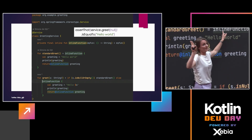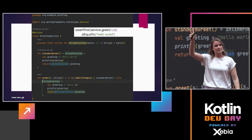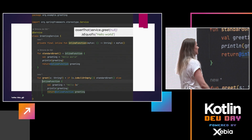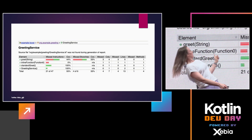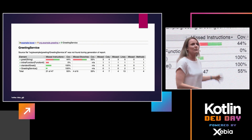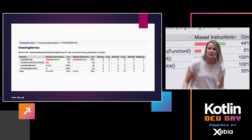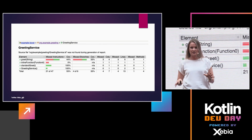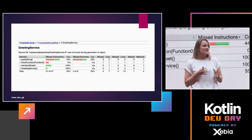So the expected flow is: it goes to greet, it's null so it falls back to your standard greet — that's the second method — which then calls the inline function. So three methods should have been hit. But unfortunately, if you look at your JaCoCo report, you see that the inline function shows zero — it has not been hit. Following this report, I would say only two methods were covered, but it's actually three. This is one of the JaCoCo bugs — it cannot handle inline functions.